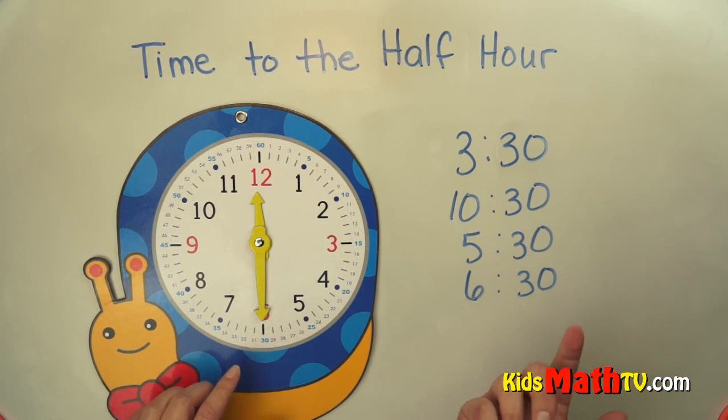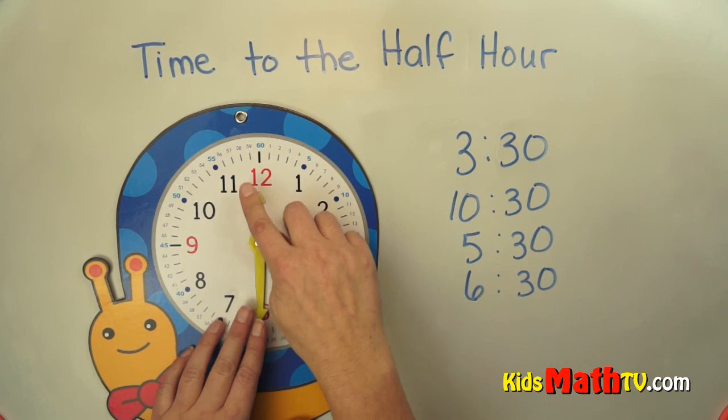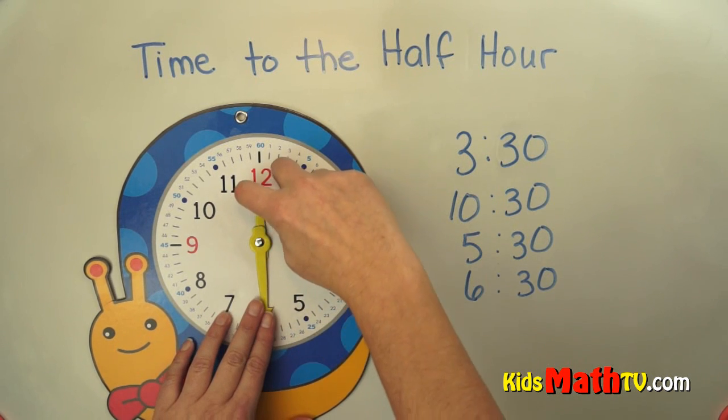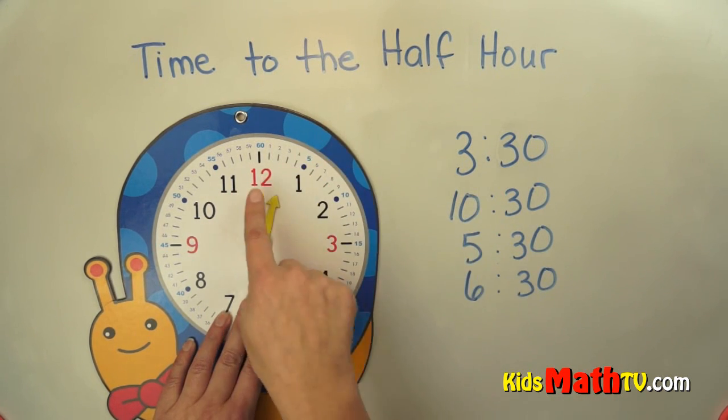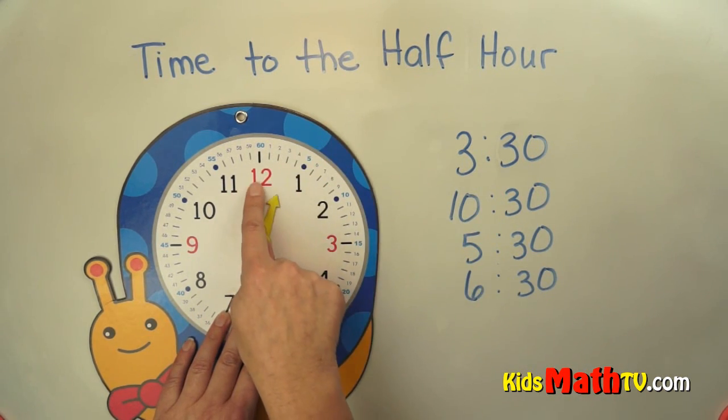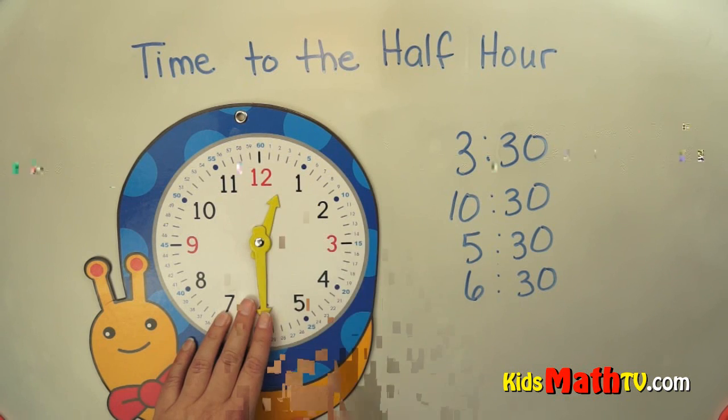This shows 12:30 because it's halfway between 12 and 1 o'clock. That's why we say 30 minutes past, or 12:30.